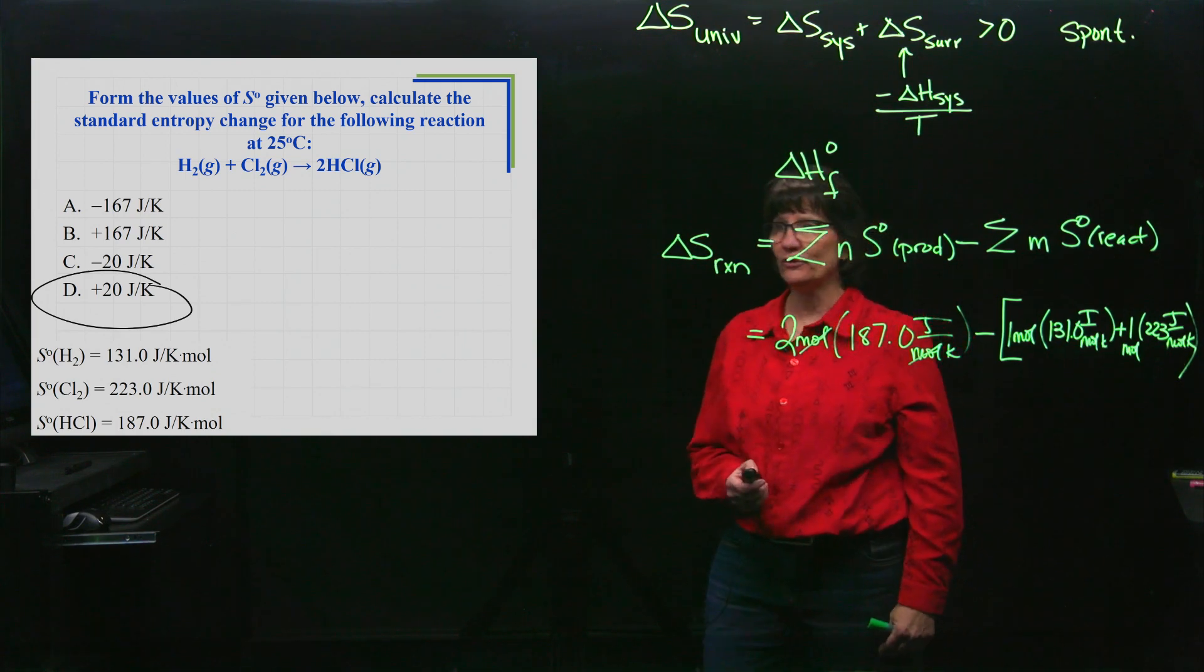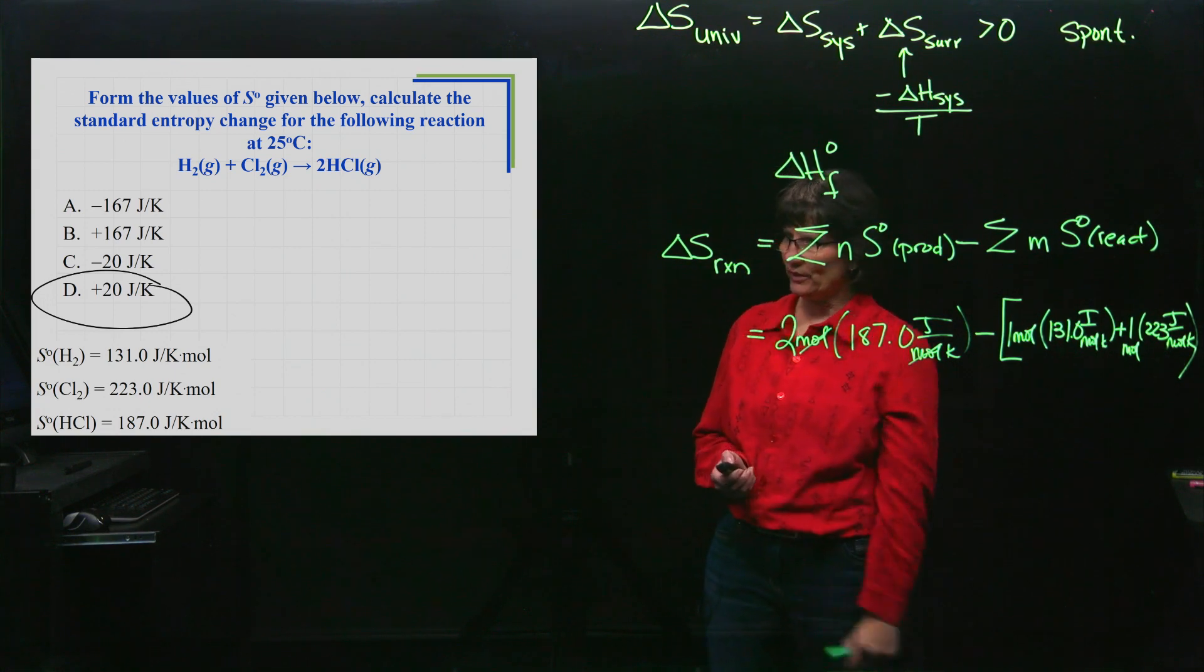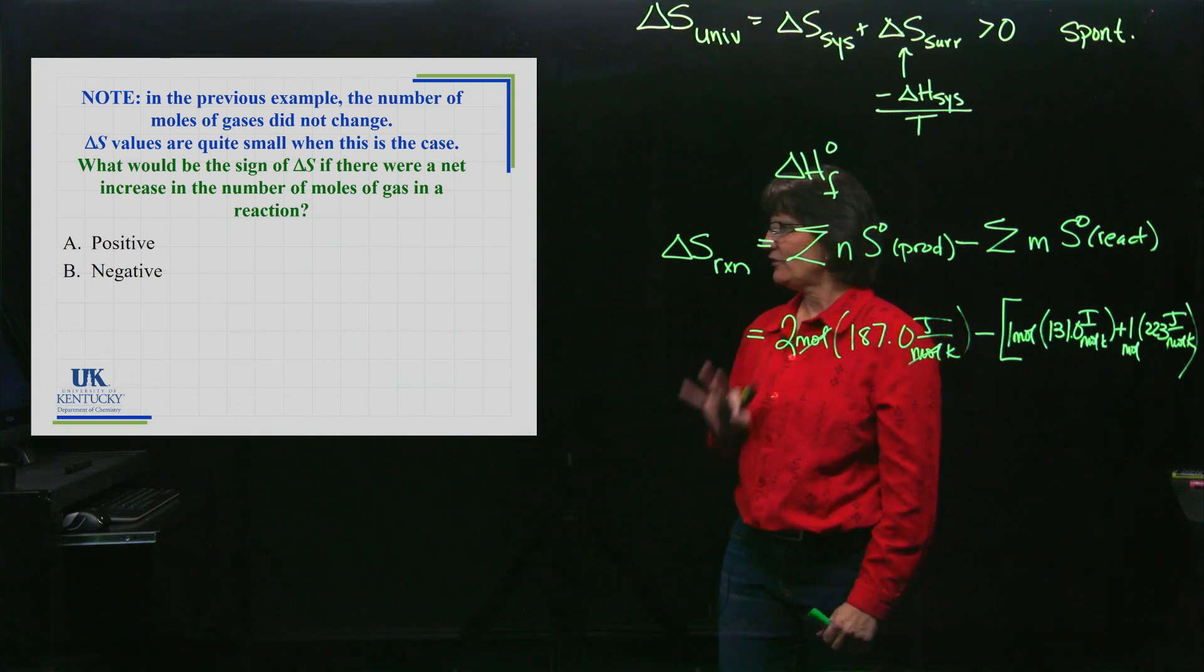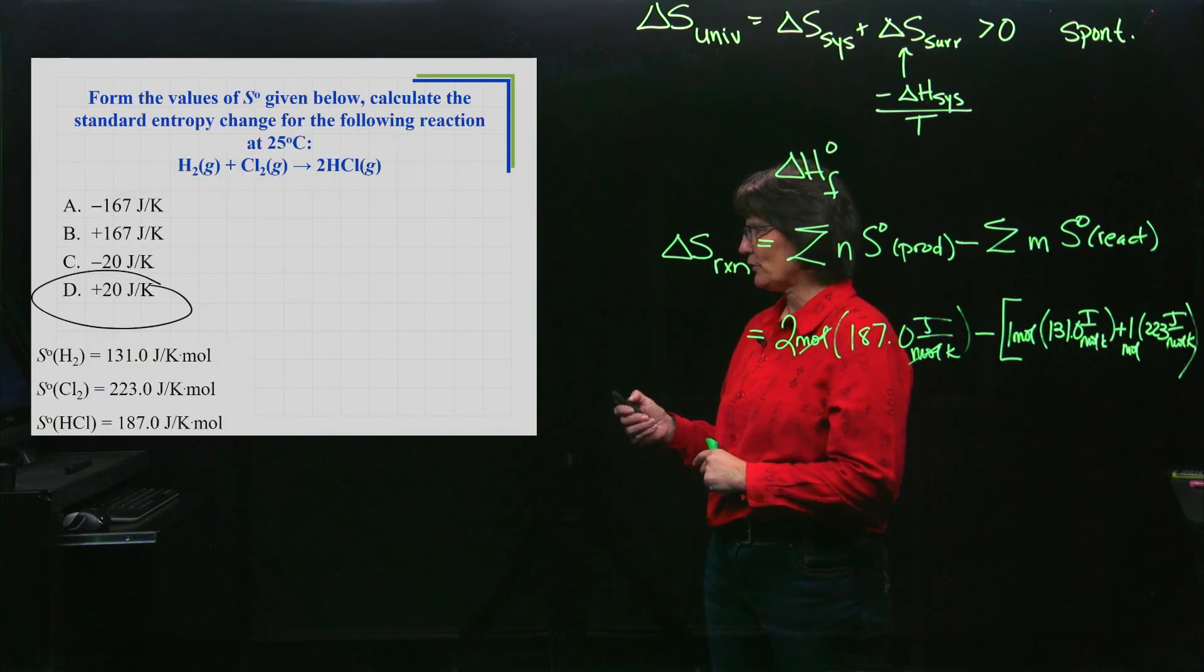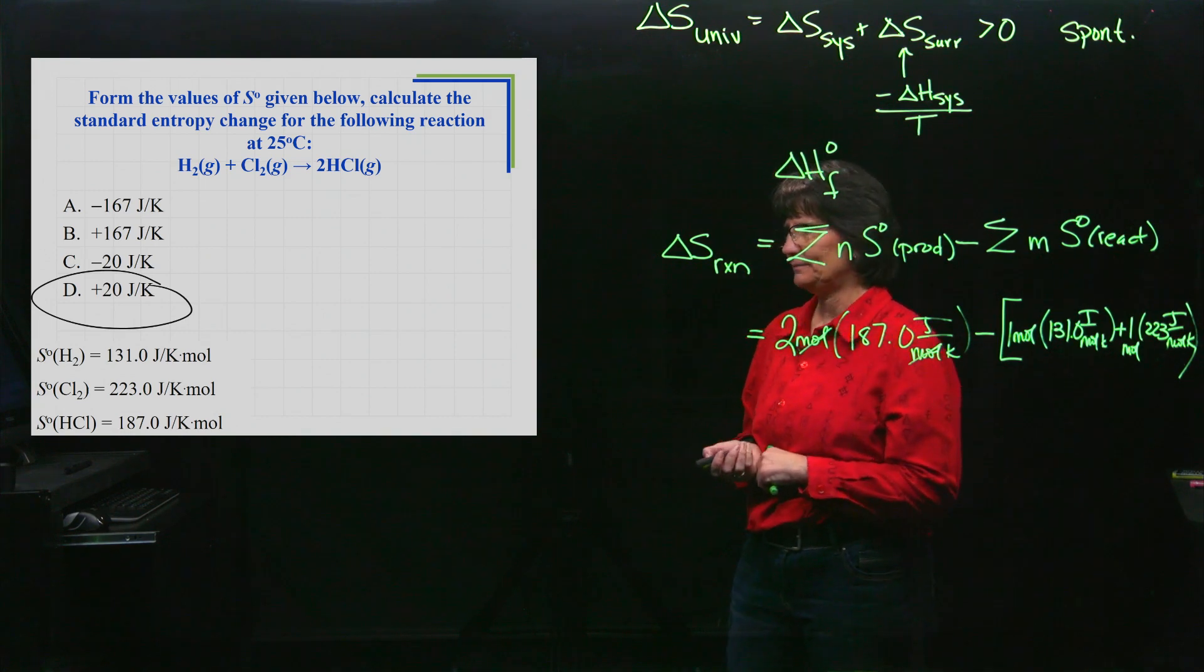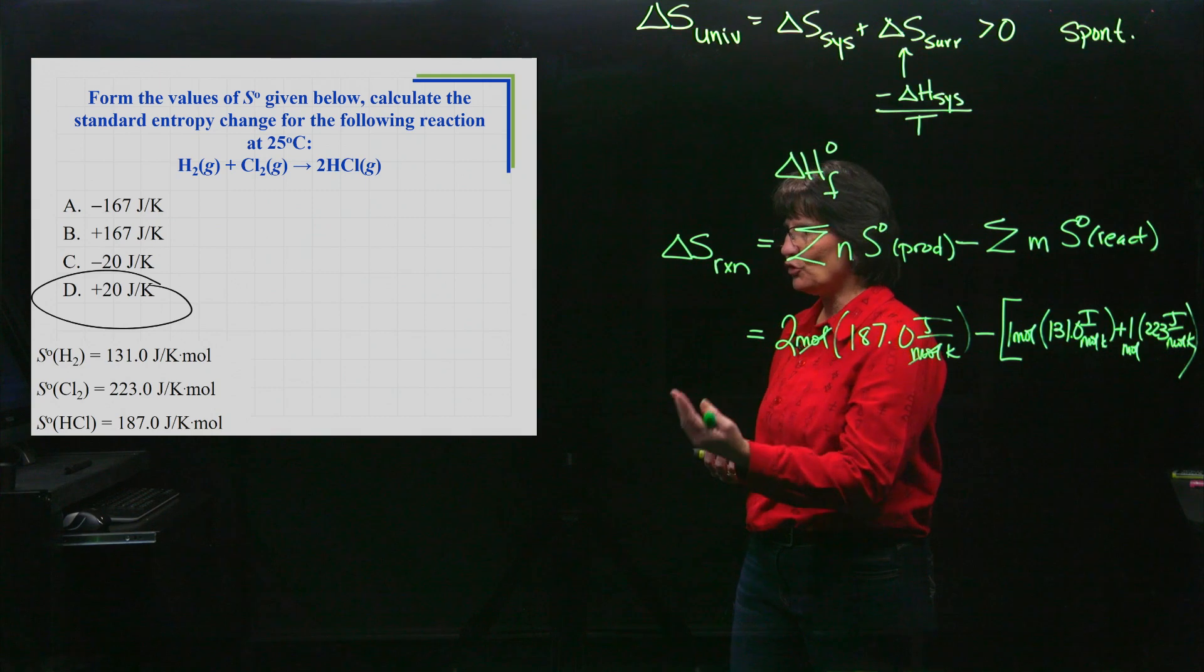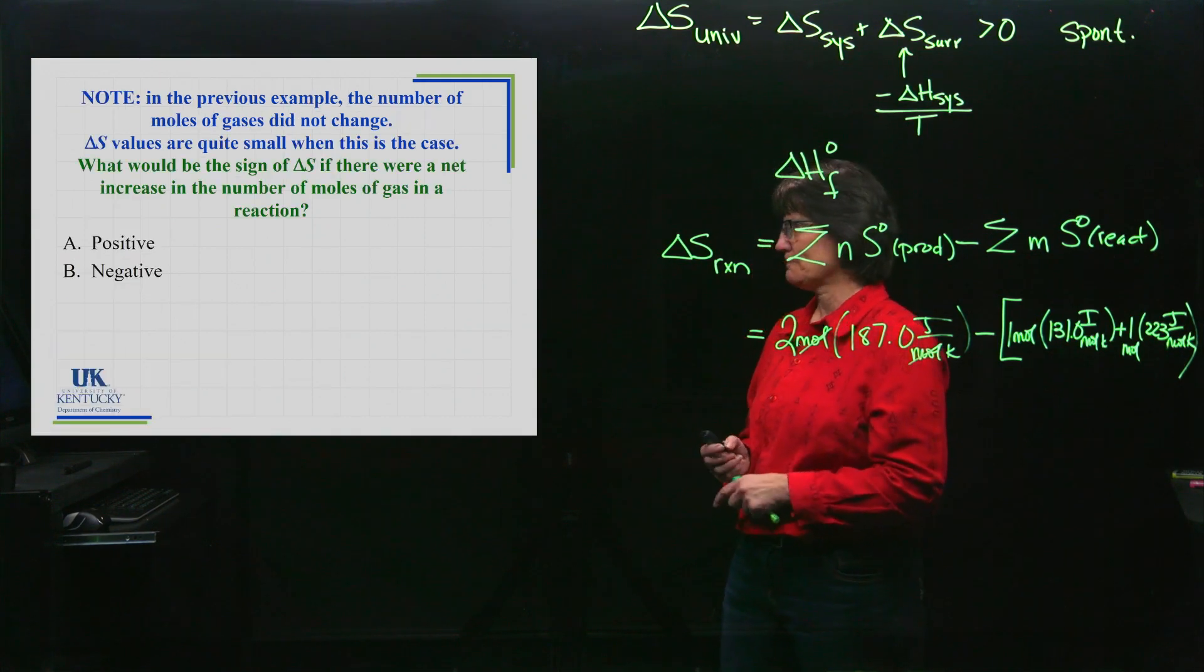You're subtracting the whole sum, so you're also subtracting the entropy of the Cl₂, which is 223 joules per mole Kelvin. I'm going to reiterate - students will punch in minus the first one and then add the second, but you have to subtract the first one and subtract the second one, or add them together first and subtract. Did the disorder increase or decrease? The reaction had a slight increase in the amount of disorder. In this previous example, the number of moles of gas did not change.